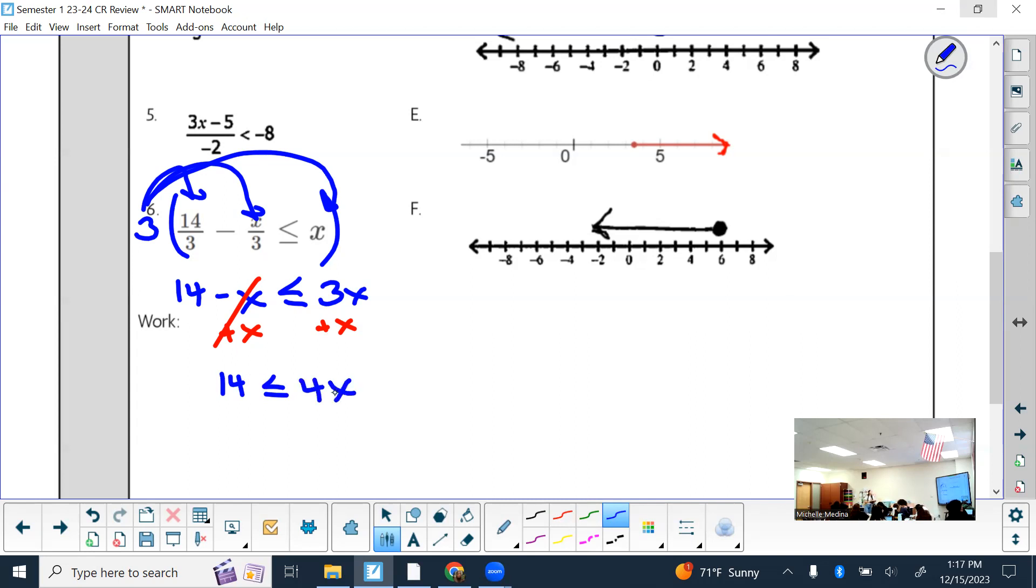And then opposite of multiplying by four would be dividing, whatever you do on one side. And then now I have a fraction. What's 14 divided by four? 3.5. Check me on that.